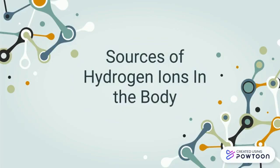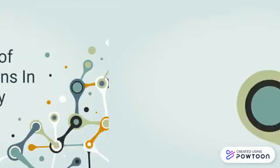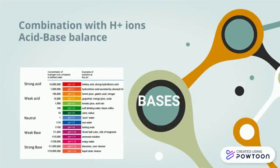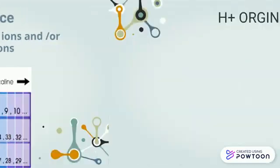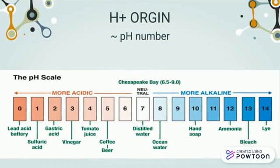In today's short video, we'll be discussing the sources of hydrogen ions in the body. Acid-base balance regulates hydrogen ion concentration of body fluids. Slight changes in hydrogen ion concentrations can alter rates of enzyme-controlled metabolic reactions, shift distribution of other ions, or modify hormone actions. pH indicates the degree to which a solution is acidic or basic.